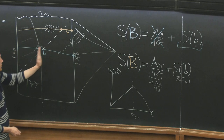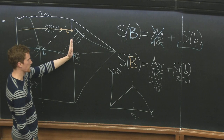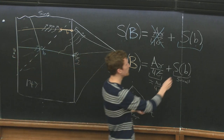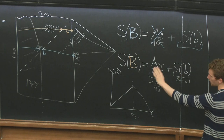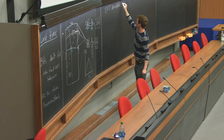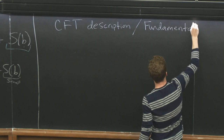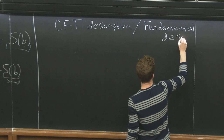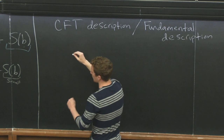We drew this picture combining the gravity system with the CFT and the reservoir, but there are really two descriptions. There's the one best given by the gravitational drawing, and then there's the fundamental description using the CFT, which is a more fundamental description of the physics than semi-classical gravity, which is an effective theory.